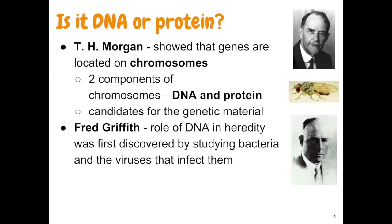Another scientist who contributed to our discovery of DNA as genetic information was Thomas Hunt Morgan. We talked about him in genetics — he studied genes on Drosophila melanogaster chromosomes. He knew that chromosomes had two components: a DNA component (deoxyribonucleic acid) and a protein component. Both were candidates for genetic material. At the time, protein actually seemed a stronger candidate than DNA, though we'll find out that's wrong.